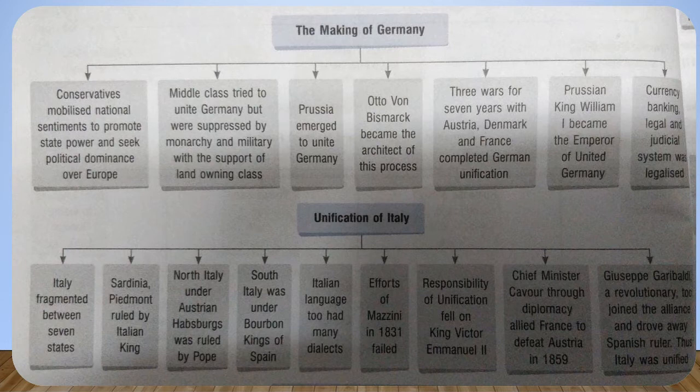This brings us to two major topics: making of Germany and making of Italy. Conservatives mobilized national sentiments to promote state power and seek political dominance of Europe. The middle class tried to unite Germany but was suppressed by the monarchy and military with little support of the landowning class. Prussia emerged to unite Germany. Otto von Bismarck became the architect of this process. Three wars over seven years were fought with Austria, Denmark and France, which completed German unification. The Prussian king William I became the emperor of united Germany. The currency, banking, legal and judicial systems were standardized.